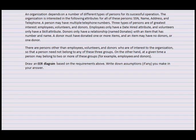All right, so now we're going to be solving an EER diagram problem to understand it a little bit better, because practicing will make it better. As the question reads, an organization depends on a number of different types of person for its successful operation. The organization is interested in the following attributes: SSN, name.